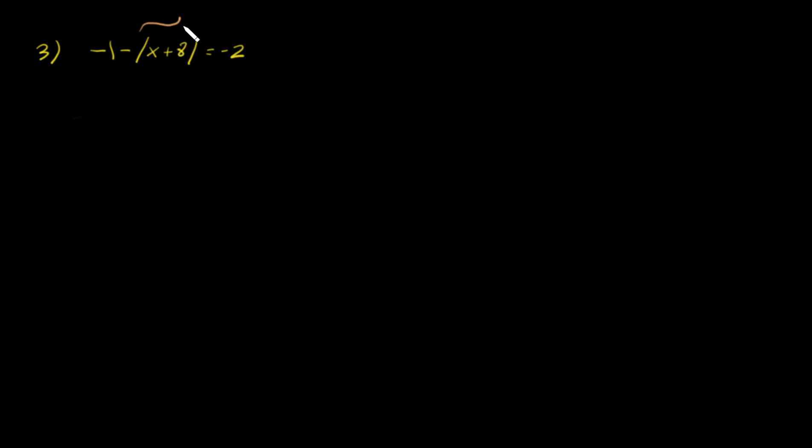...of this entire thing as x, then what's being done to the x? Well, first there's a negative one here, and that's being multiplied to negative one, and then this negative one is being added to it. So if I actually rewrite this to make a little bit more sense, it'll be negative one times x plus 8 minus 1 equals negative 2.